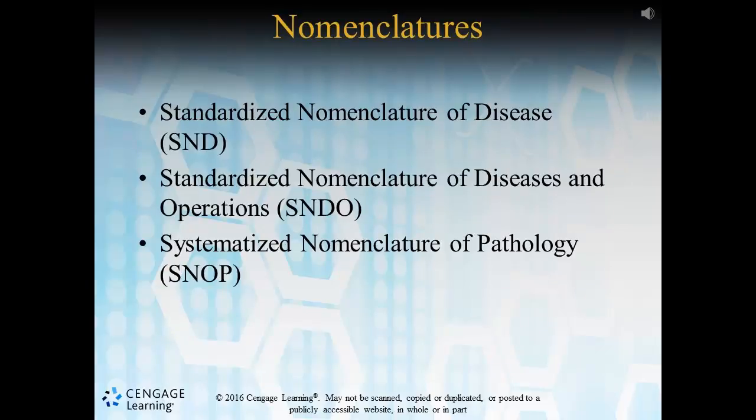Let's review the various types of nomenclatures used today. Standardized Nomenclature of Disease, or SND, was developed in the late 1800s and introduced the concept of multiaxial coding — we code anatomy and the etiology, or cause, of a specific disease. This is, of course, also a classification system.